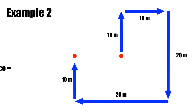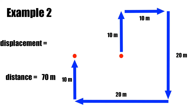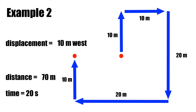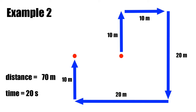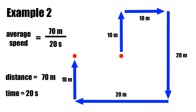Now let's take a look at example two. The motion is the same as before but completed in 20 seconds. When looking at average speed, the distance traveled was 70 meters. We calculate average speed by taking the total distance traveled — 70 meters — and dividing it by the time — 20 seconds. That gives us an average speed of 3.5 meters per second.